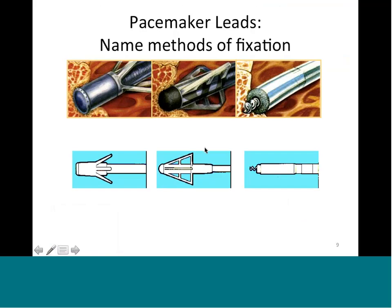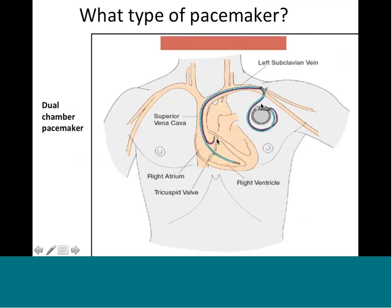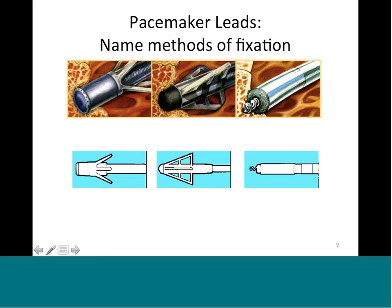When you take that pacemaker lead - you have your generator in the pocket below the left clavicle, and then you've taken your leads and put them into the ventricle and into the atrium. Now, the tip of that lead - there are three methods of fixation. I want you to tell me what these methods are. What is the first one, the one on the left?